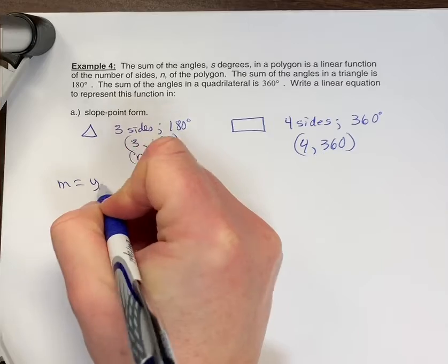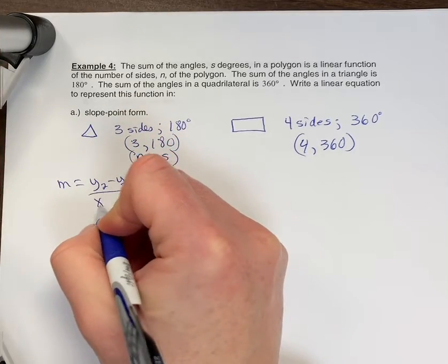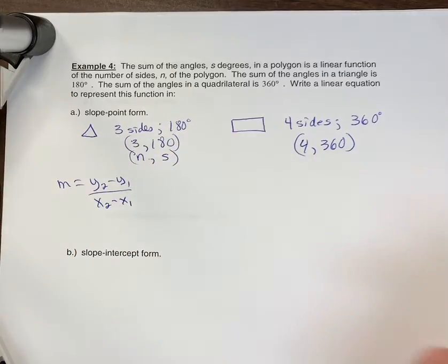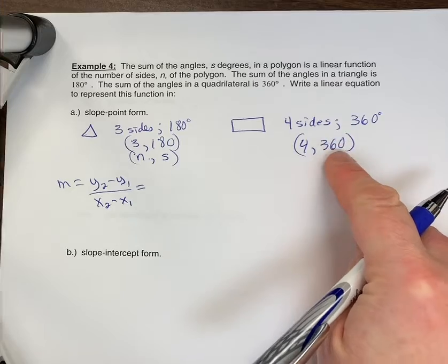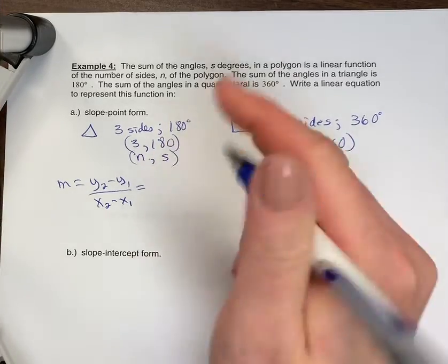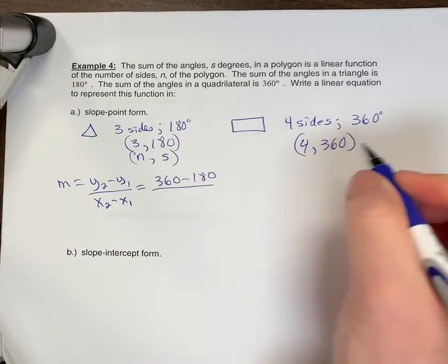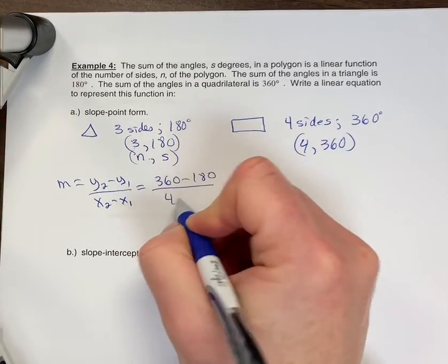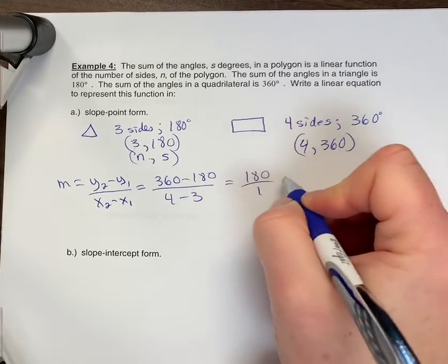We have two points, so we can actually have two answers, but we first have to find slope. So slope, if you're given two points, you're going to use your slope formula: Y2 minus Y1 over X2 minus X1. So we're going to go Y2 minus Y1, so 360 minus 180, divided by 4 minus 3.